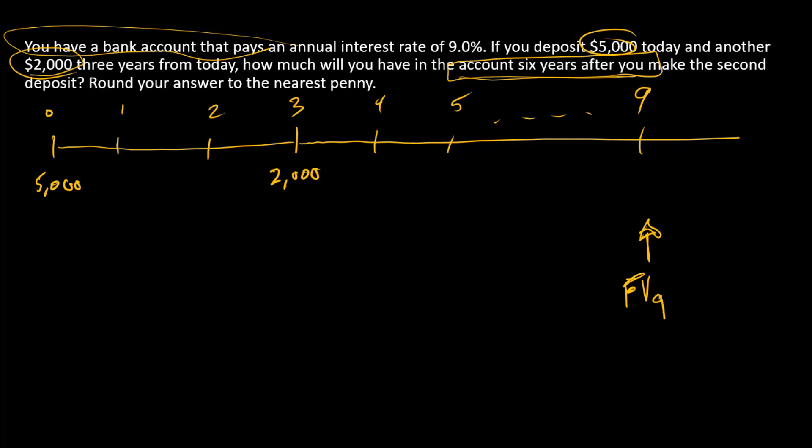Our steps would be to first calculate the future value in year nine of each of the individual cash flows, and then we'll add them up. And so we need to know how far forward we're compounding. For this $2,000 we're going forward six years, and for this $5,000 we're going forward nine years.